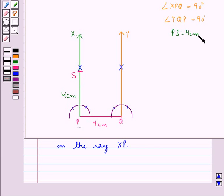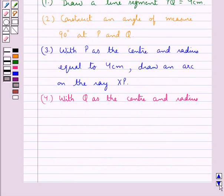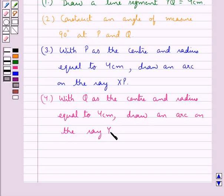Then, in the same way, in the next step, with Q as the center and radius equal to 4 cm, draw an arc on the ray YQ.